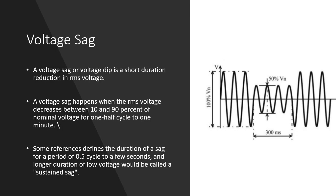So when my voltage value decreases, that's a voltage sag. This occurs for at least half a cycle up to one minute — or in some cases from 0.5 cycles to a few seconds. If it exceeds a few seconds, we call it a sustained sag. Voltage sag is also known as voltage dip or voltage drop, and it is the most common issue in voltage problems.